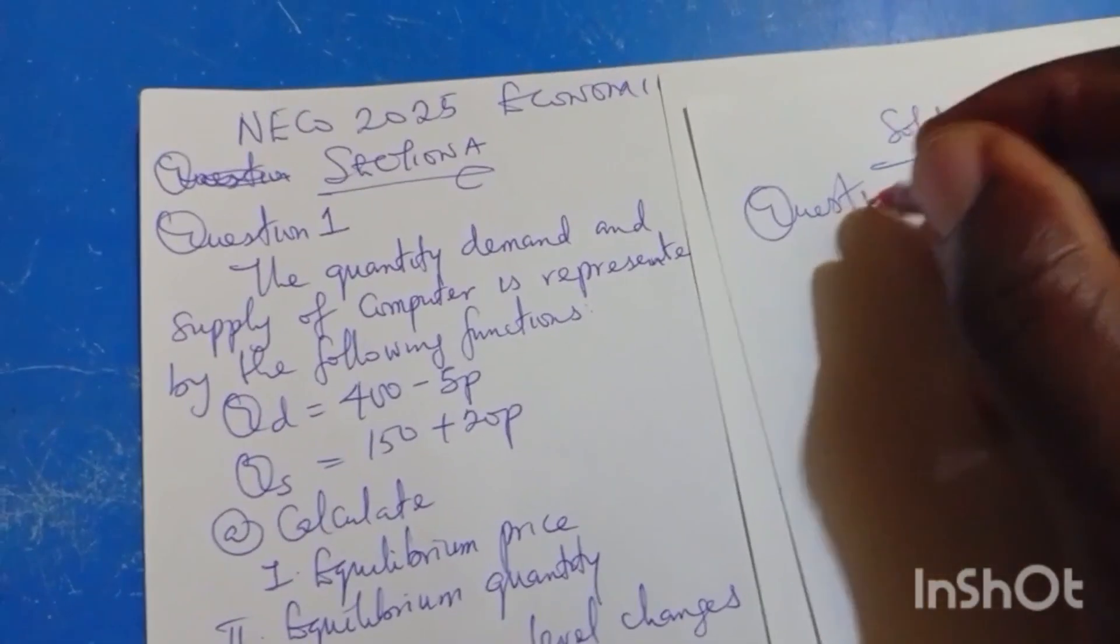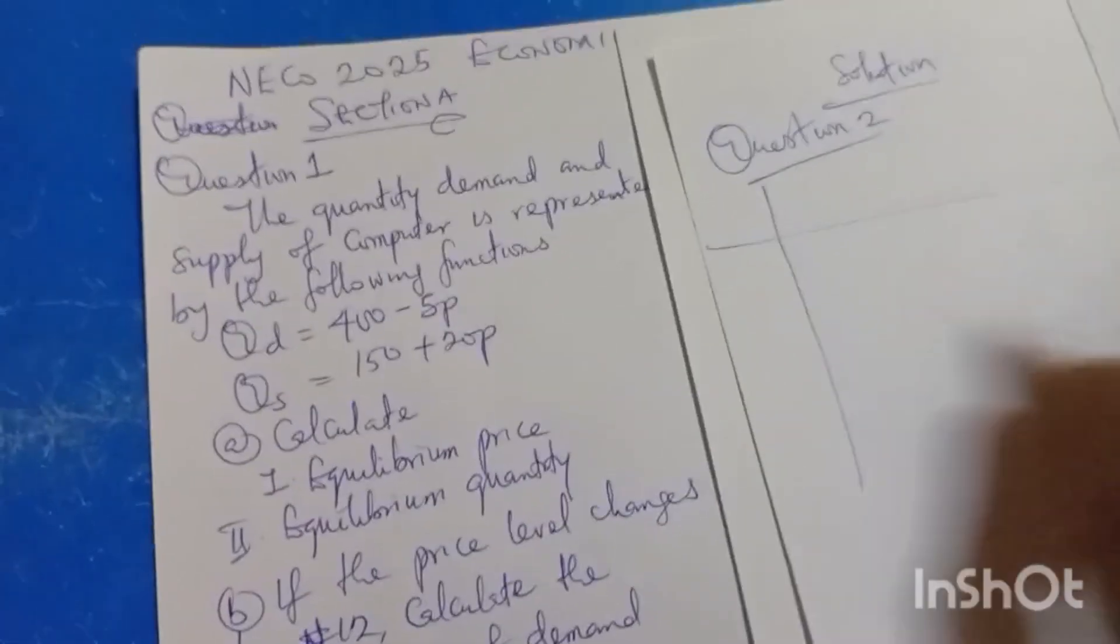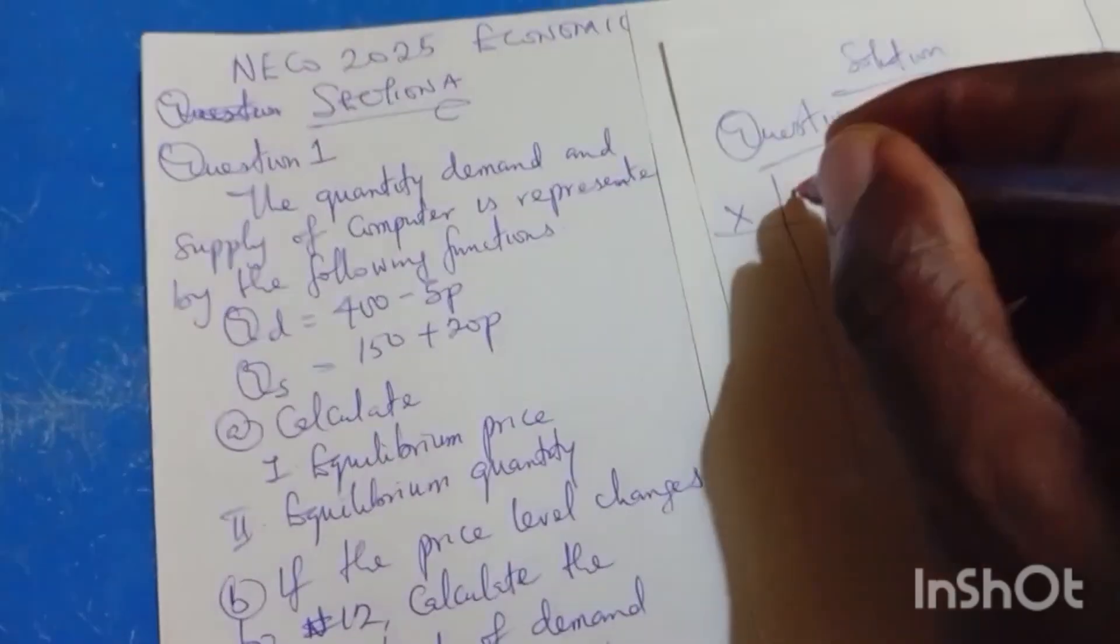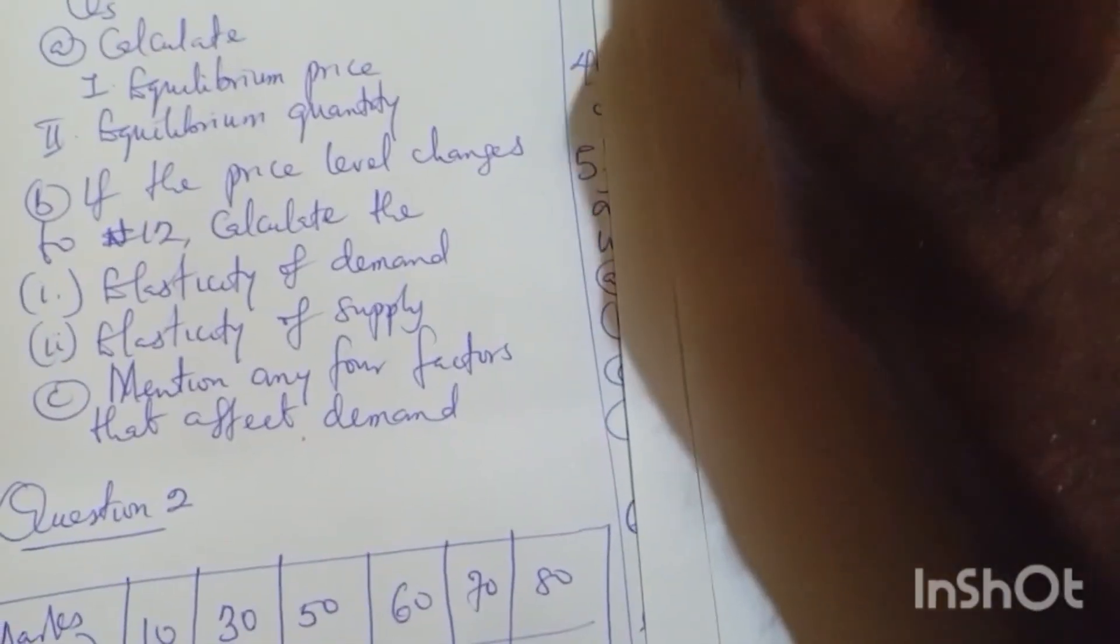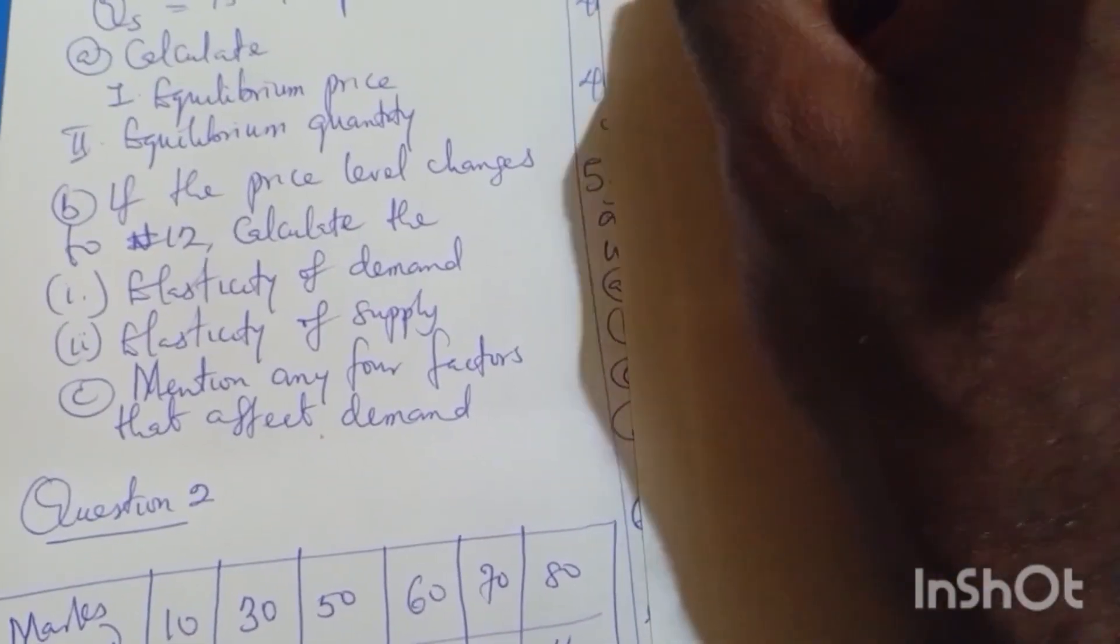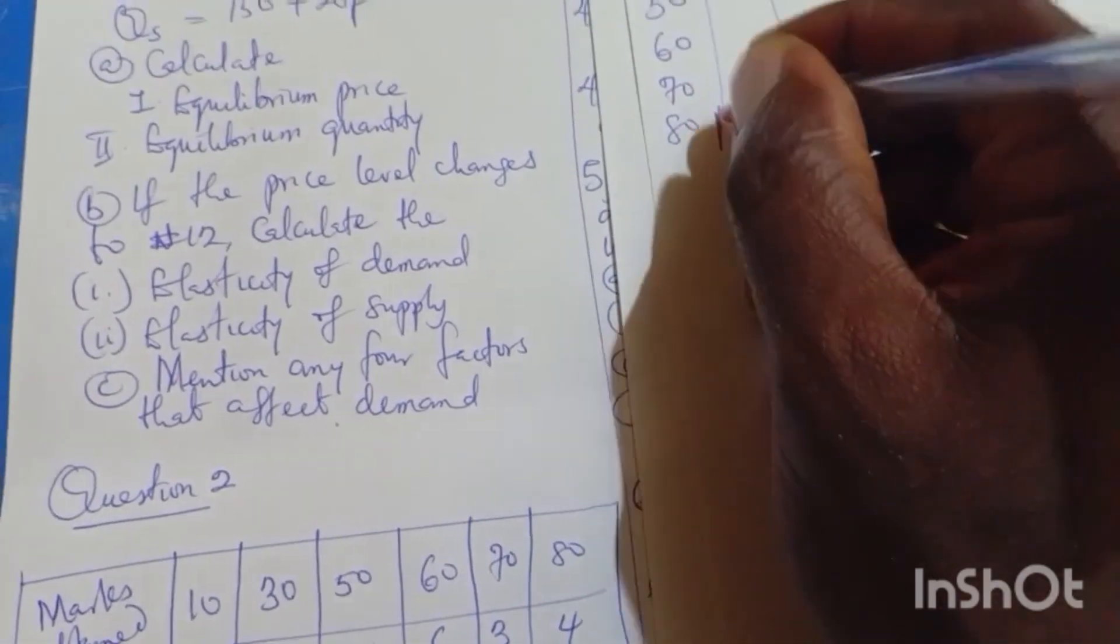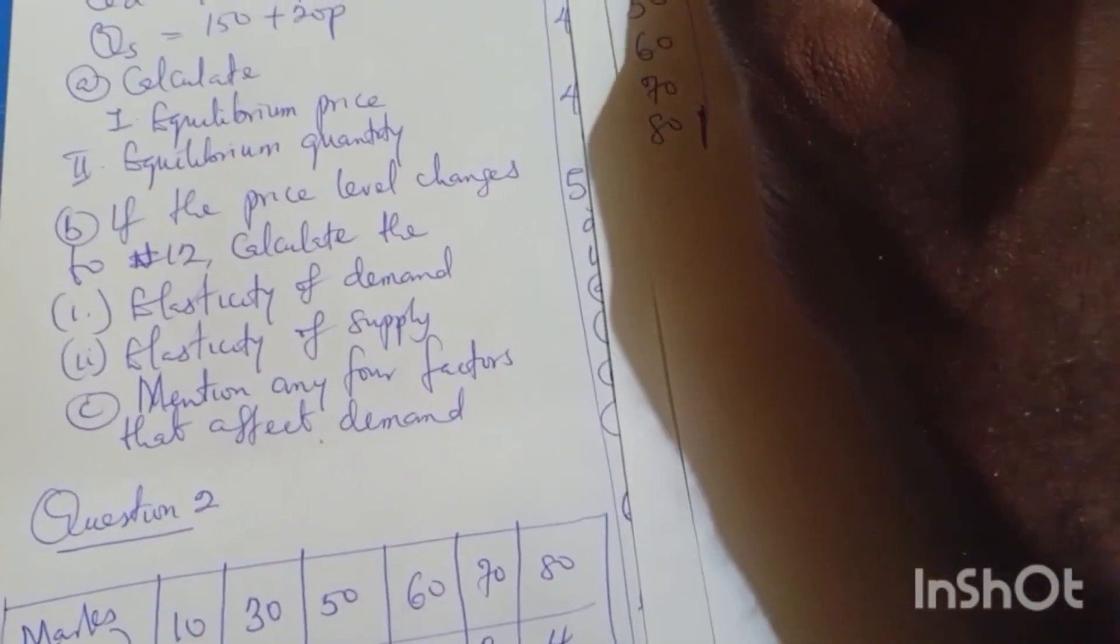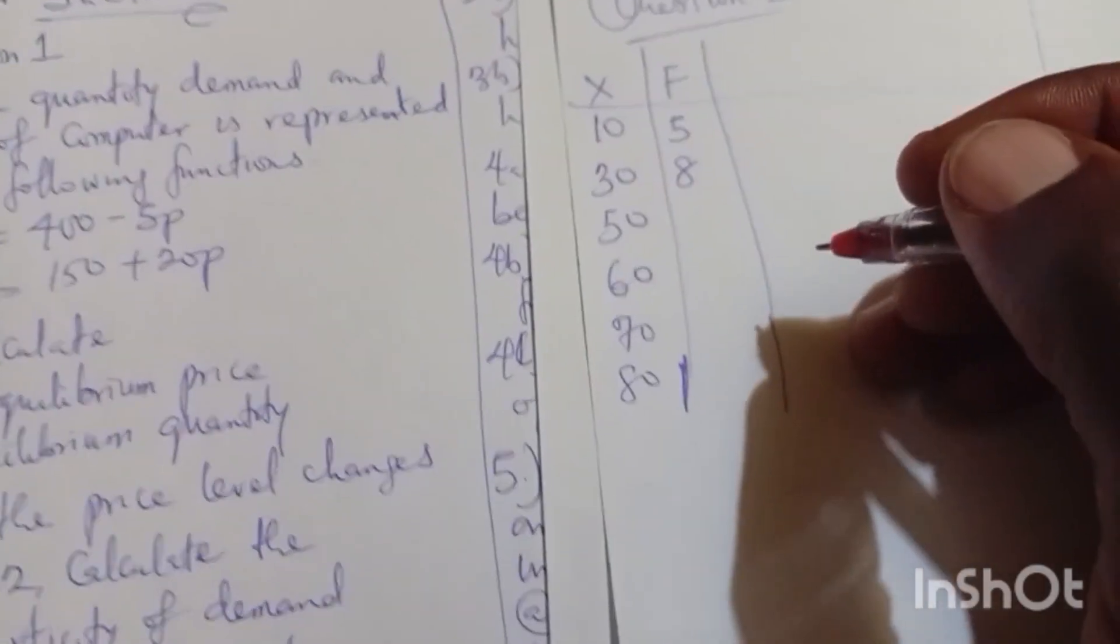Question 2. Let's be focused. The question has a data table. X and F. What are my X values? I have 10, I have 30, I have 50, I have 60, I have 70, and I have 80. They put their frequencies there: 5, 8, 14, 6, 3, and 4.